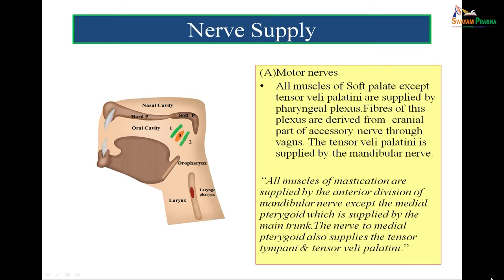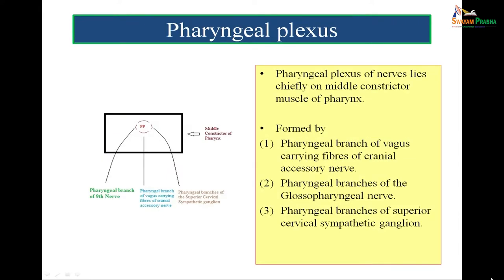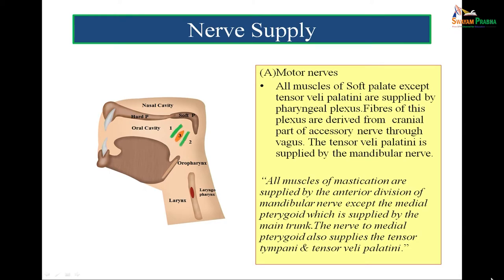The nerve supply of the soft palate involves the pharyngeal plexus, which lies on the middle constrictor of the pharynx. The pharyngeal plexus is formed from three components: the pharyngeal branch of the 9th nerve, the pharyngeal branch of the 10th nerve carrying fibers of the cranial accessory nerve, and the pharyngeal branches of the superior cervical sympathetic ganglion. All muscles of the soft palate are supplied by the pharyngeal plexus, except the tensor veli palatii, which is supplied by the mandibular nerve.